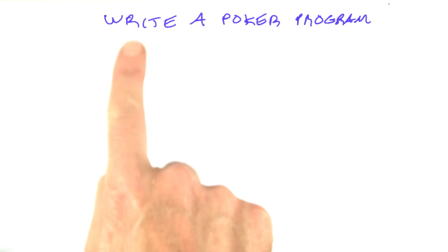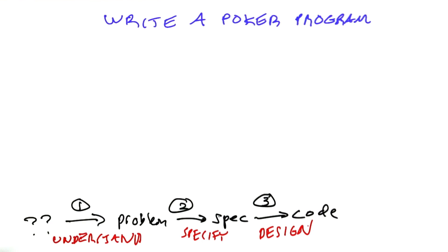In this unit, we're going to talk about how to write a poker program. This is going to be an example of a general process where we start with a vague understanding and then we refine our understanding to have a formal specification of a problem.